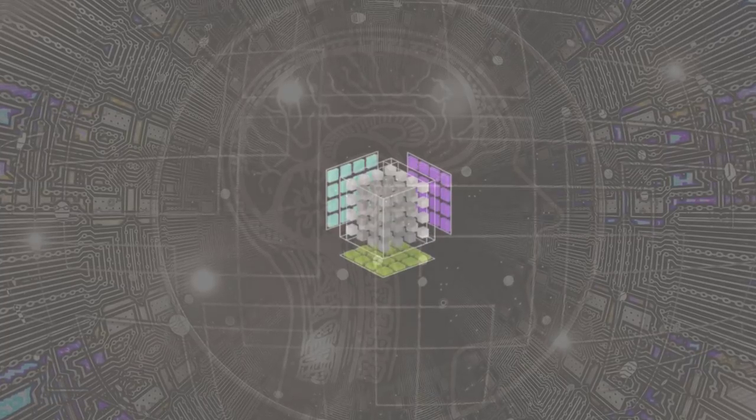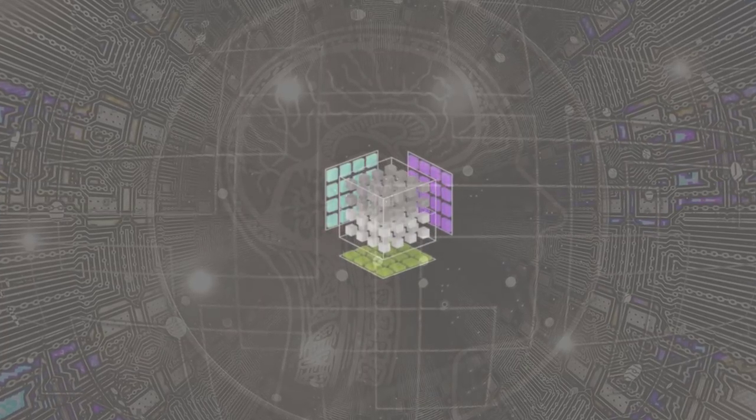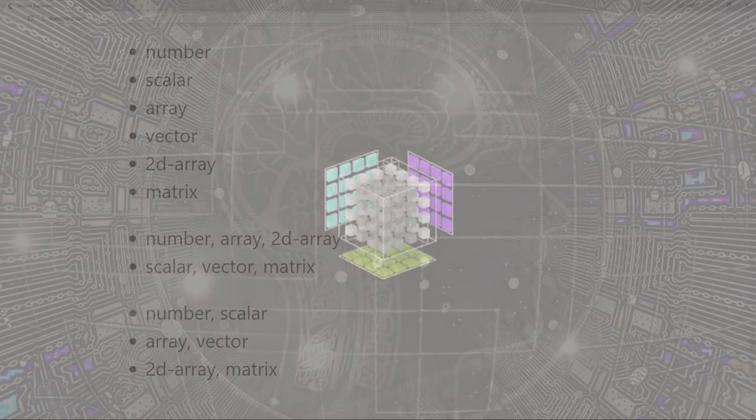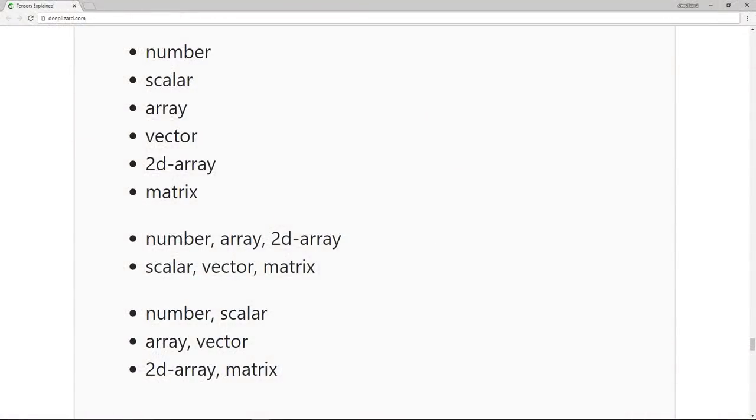The concept of a tensor is a mathematical generalization of other more specific concepts. Each of these examples are specific instances of the more general concept of a tensor. Let's organize this list of example tensors into two groups. The first group of three terms: number, array, and 2D array are all terms that are typically used in computer science.